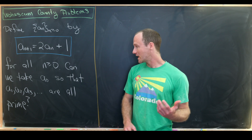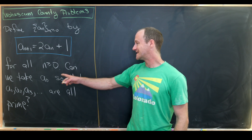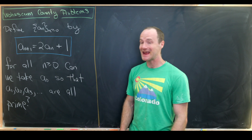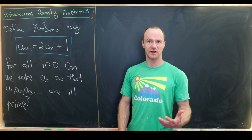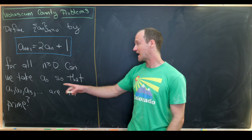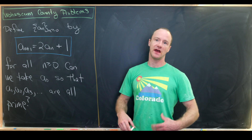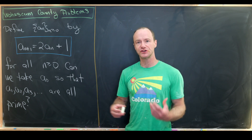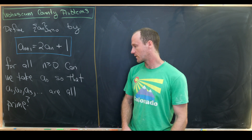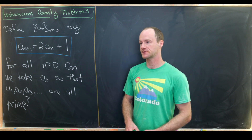The question is: can we pick an a_0 so that a_1, a_2, a_3, a_4, and so on are all prime numbers?